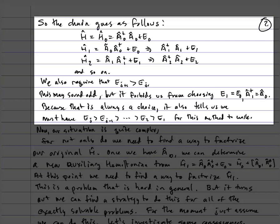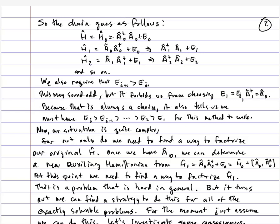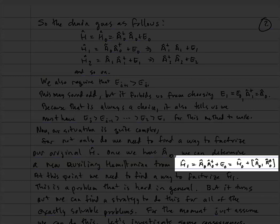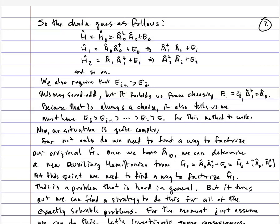The situation is complicated here. Not only do we have to find a way to factorize the original H, but we have to find a way to factorize all of these new auxiliary Hamiltonians, which have different potentials than the original H had. The relationship between h₁ and h₀ comes from the commutator of a₀ with a₀†. It sounds like this is going to be hard, but it turns out for all exactly solvable problems, there's a simple strategy we can use to factorize all of them.